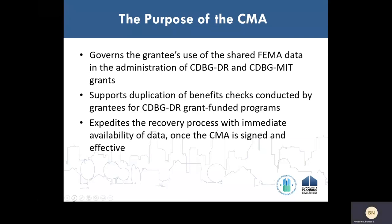The CMA addresses essential data sharing between HUD and the grantee by governing the use of the shared data to prevent the duplication of benefits in the administration of grantees' CDBG-DR and CDBG mitigation grant awards. In order to be able to share this data with grantees, HUD has entered into an agreement with FEMA to obtain data on applicants registering for FEMA individual and household programs to share with grantees for the purpose of preventing the duplication of benefits. The CMA will help to expedite program implementation by making FEMA data available quicker, which will allow grantees to move forward with providing assistance for CDBG-DR grant funded programs. This will help expedite recovery for applicants, reduce duplication of benefits, and allow grantees to determine benefits upon application because the grantee will have the FEMA assistance amounts immediately available.